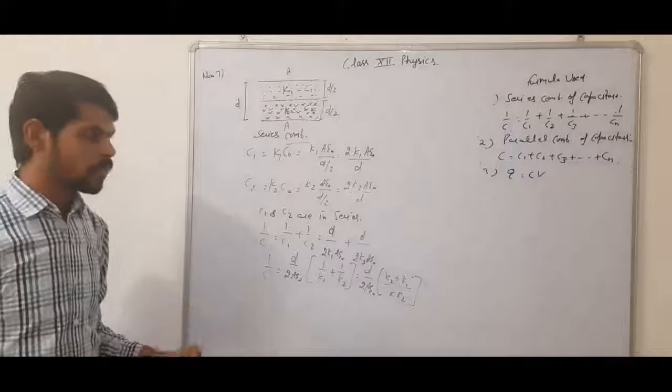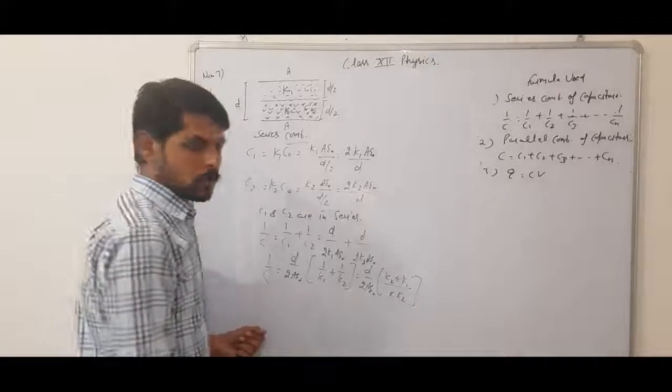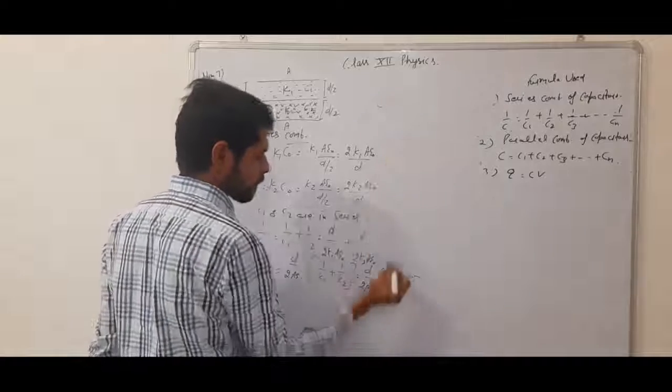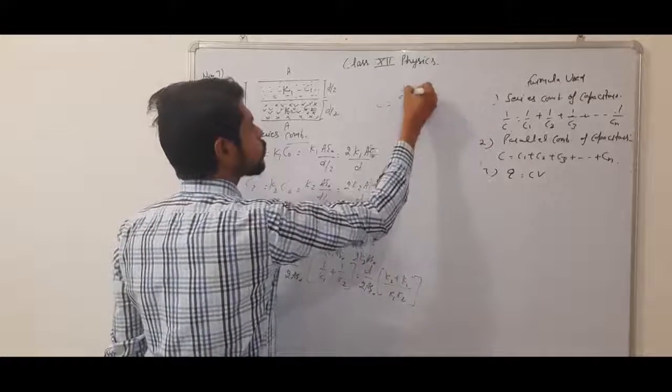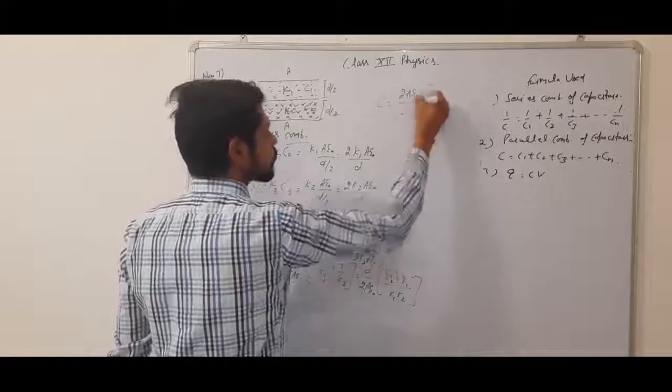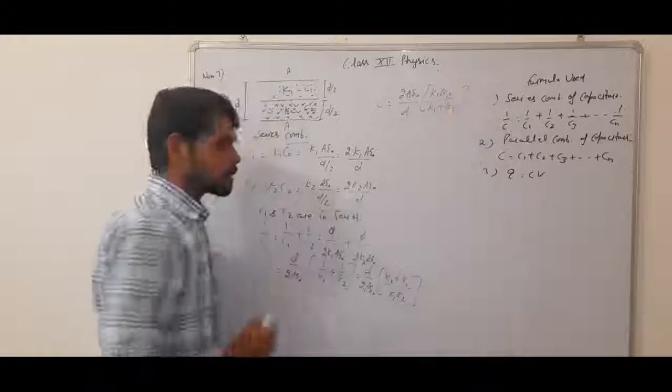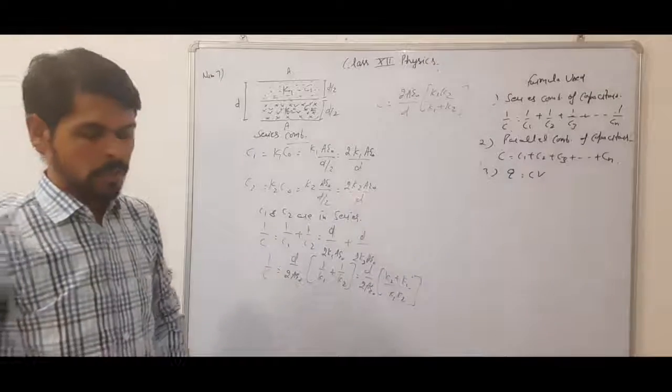So this is 1 by C value. The C value will be the reciprocal of all this, so it will be 2 A epsilon naught by D into K1 K2 by K1 plus K2. This is the total capacitance after filling two dielectrics.